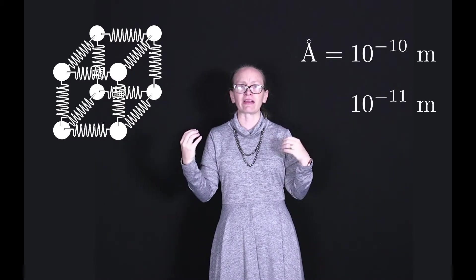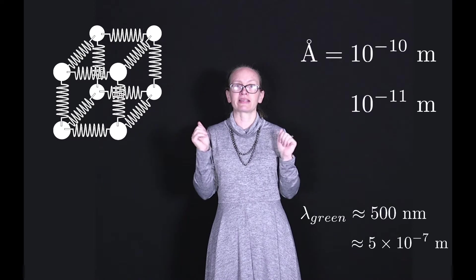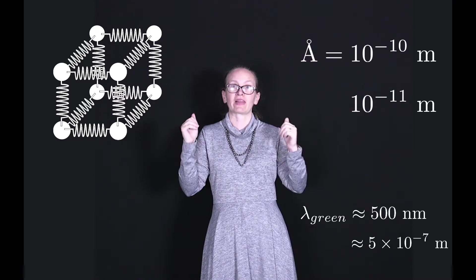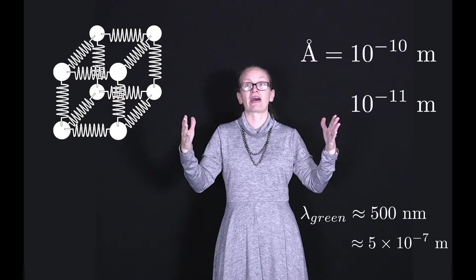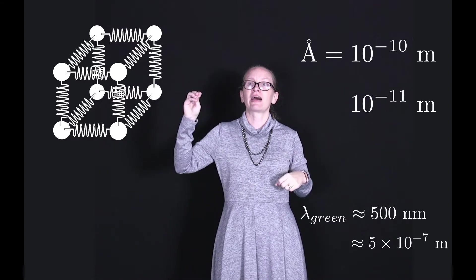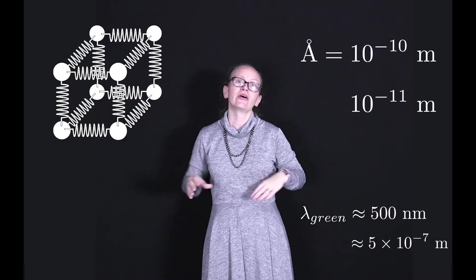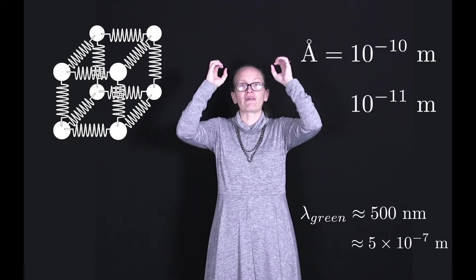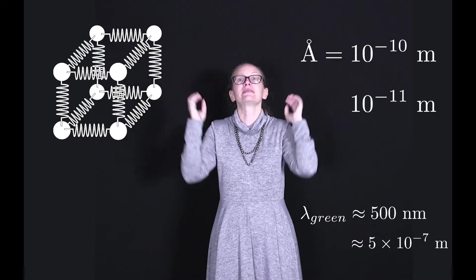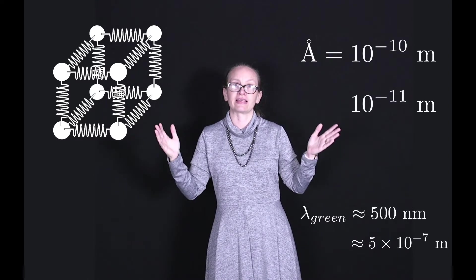As a point of reference, green light, which is right in the middle of the visible spectrum, has a wavelength of about 500 nanometers, which is 5 times 10 to the minus 7 meters. So the spacing of atoms in a solid is much smaller than the wavelength of light.